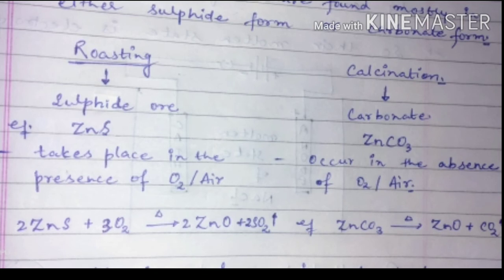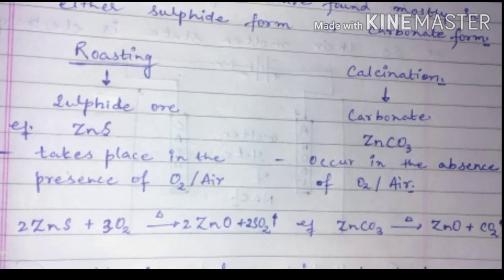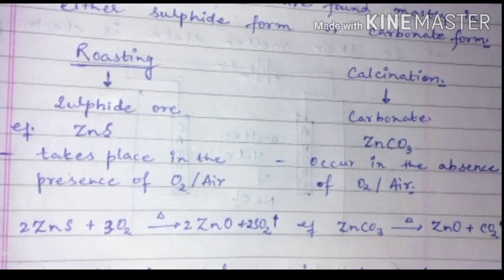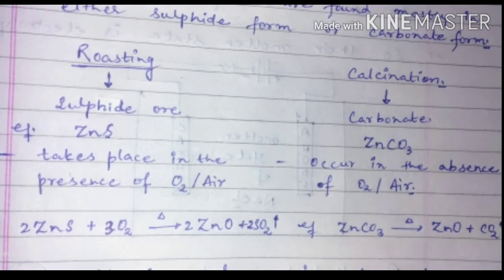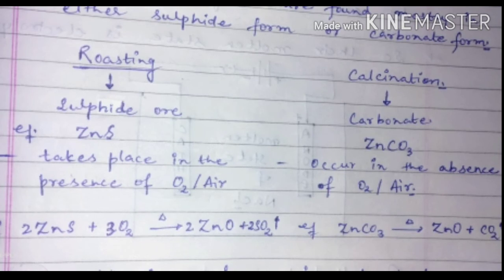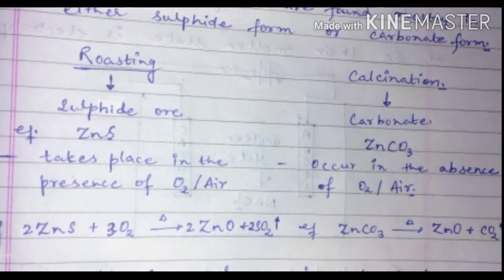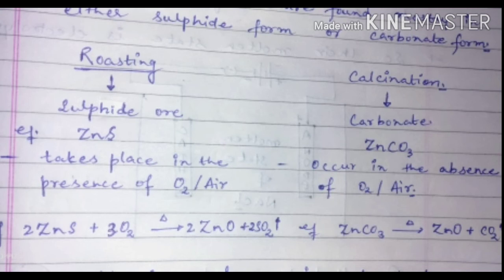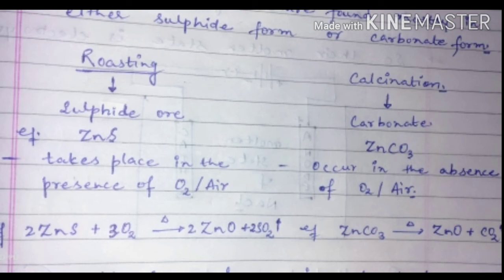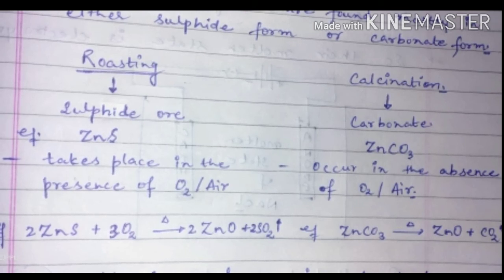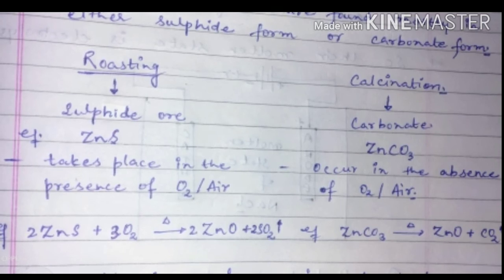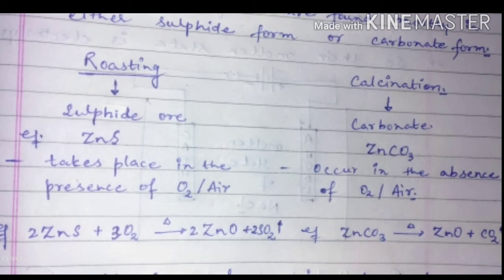For carbonate ores, we need to heat them but ensure there is a limited amount or absence of oxygen. This is because the carbonate ore already contains oxygen, so extra oxygen is not required to get the oxide form. Zinc carbonate, on heating, converts into zinc oxide and carbon dioxide. From both roasting and calcination processes we get the oxide form of zinc.